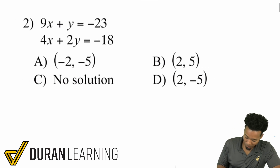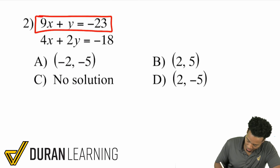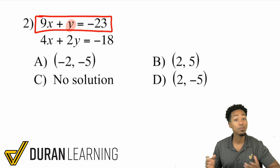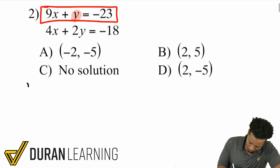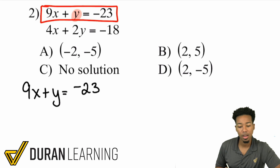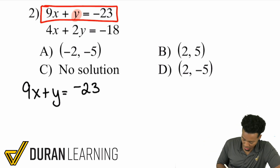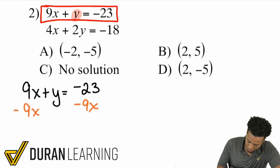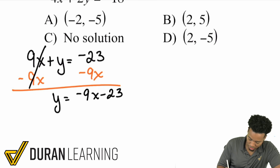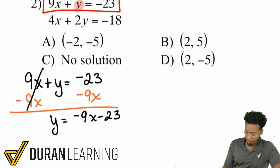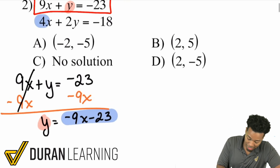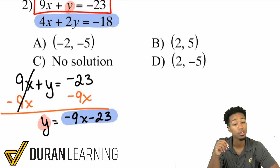What I can say is that in the first equation, I can attempt to get the Y by itself. If I can get Y by itself, I can substitute and move on. I'll subtract 9X from both sides, which eliminates it on the left side, giving us Y equals negative 9X minus 23. Now we understand that Y equals negative 9X minus 23, so I can substitute that into the other equation.